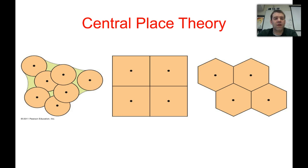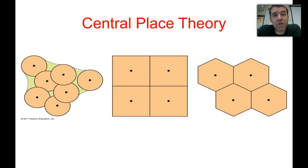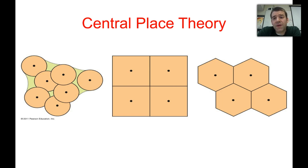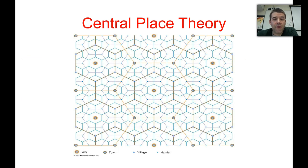Christaller designed this model starting with circles, but realized they either overlap market areas and hinterlands or leave gaps. He also looked at squares, but the distance from the center to a corner is longer than to the midpoints of the sides. So he settled on a hexagon — which isn't perfect, but strikes a balance between the two shapes and covers the entire region more effectively. The result is an overlapping hierarchy of settlements and services as produced by central place theory.